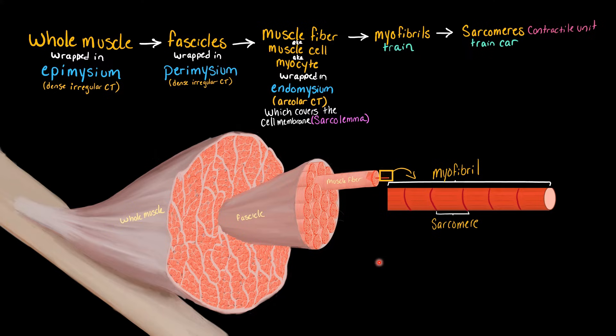The sarcomere is called the contractile unit, because when a muscle is contracting, the two ends of the sarcomere are getting closer together, and that is what makes the whole muscle shorter, is all those individual sarcomeres contracting. And the reason that they're able to contract is because they are organized collections of the myofilaments, actin and myosin.